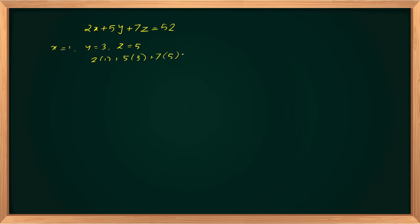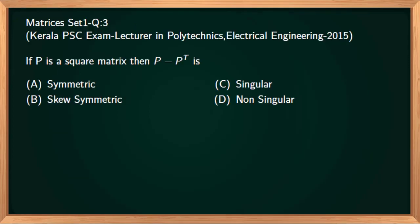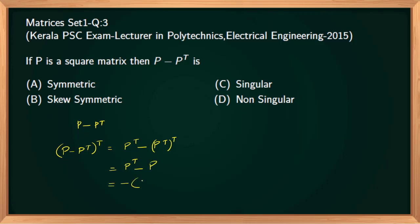Next question: if P is a square matrix, then P minus P transpose is which type of matrix — symmetric, skew-symmetric, singular, or non-singular? To find the property, we take the transpose of the given matrix: (P minus P transpose) transpose equals P transpose minus P transpose whole transpose, which equals P transpose minus P, equal to minus of (P minus P transpose).